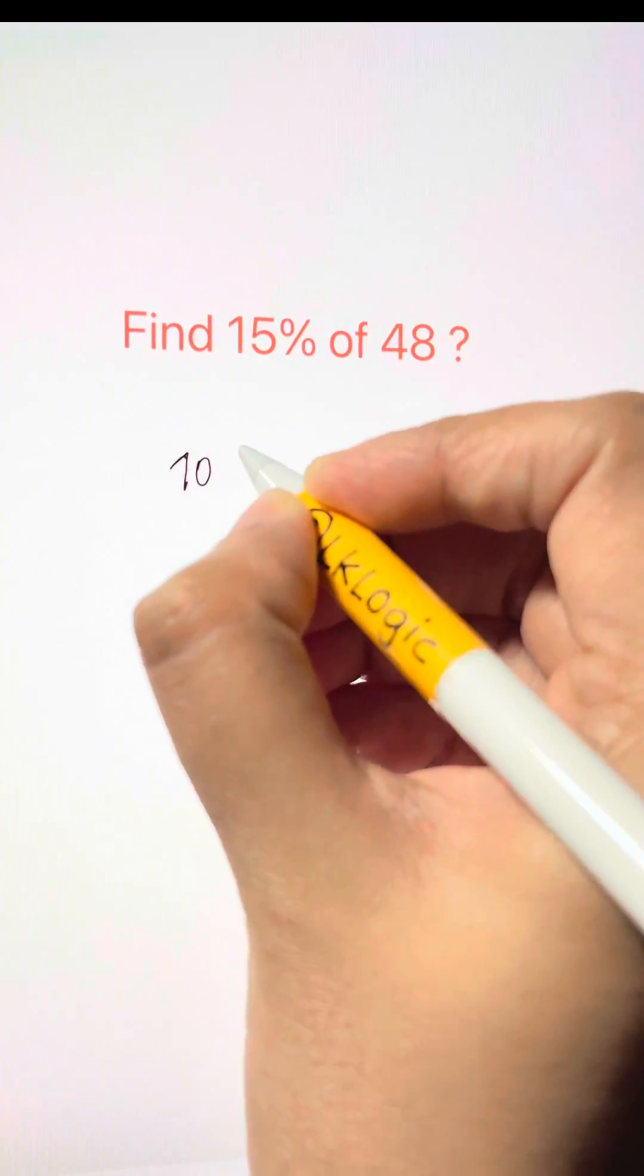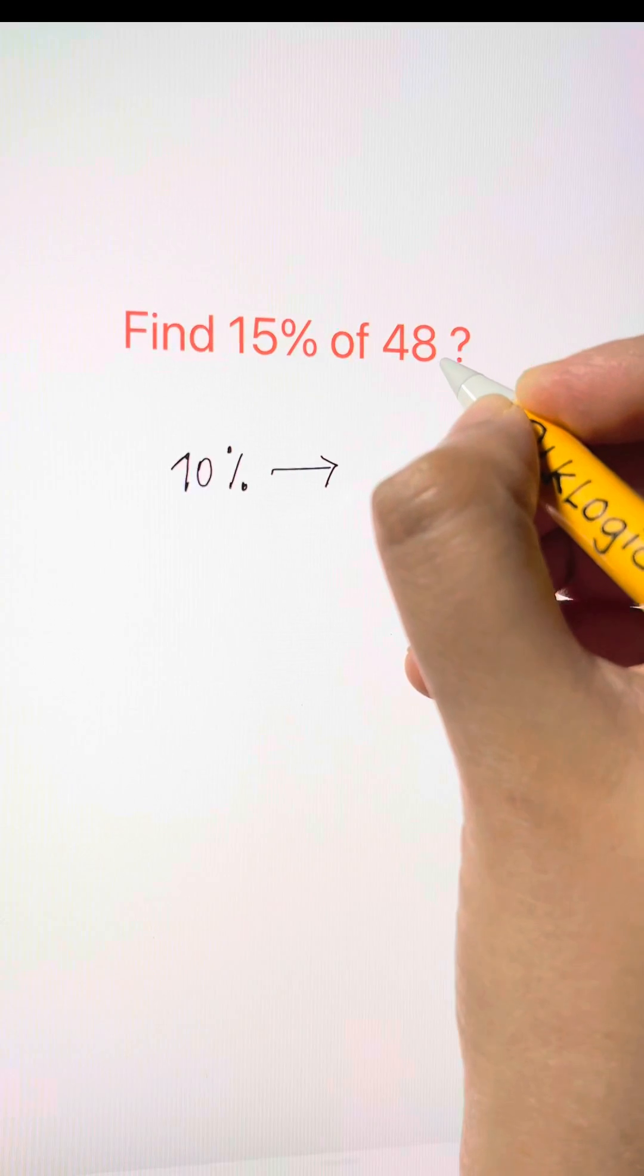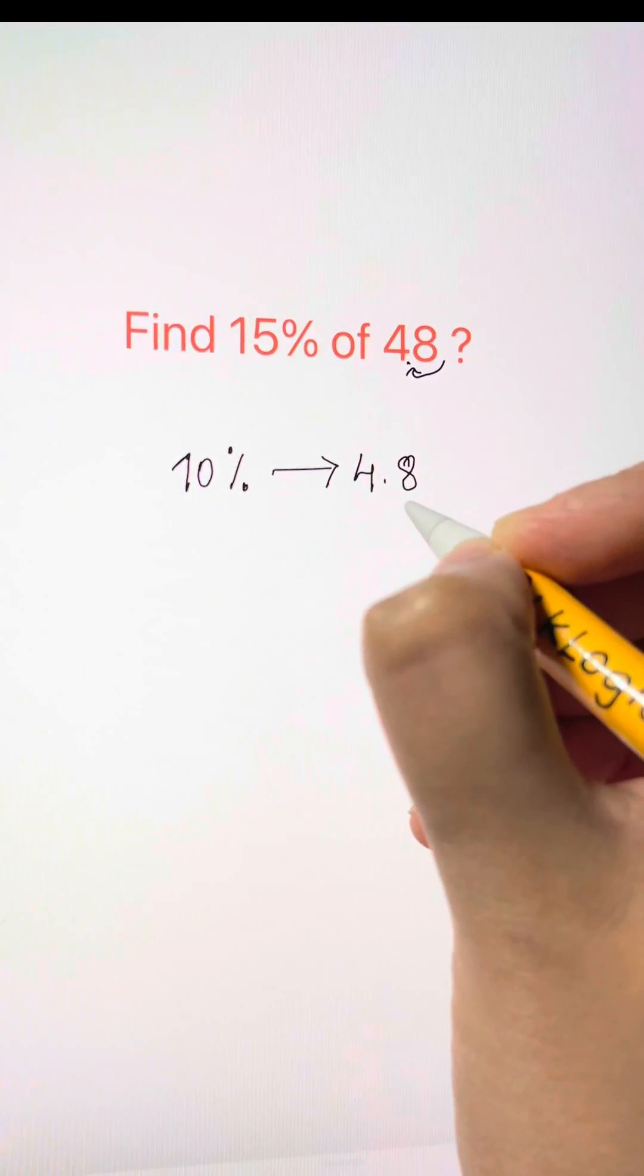For that, first we find out 10% of 48. Put the decimal on the right-hand side, move one slot to its left, and 4.8 is 10% of 48.